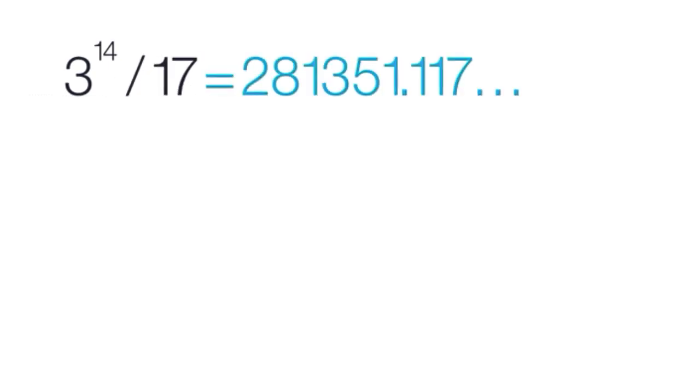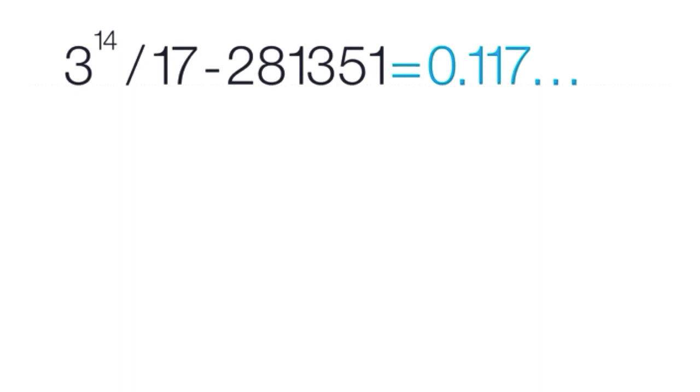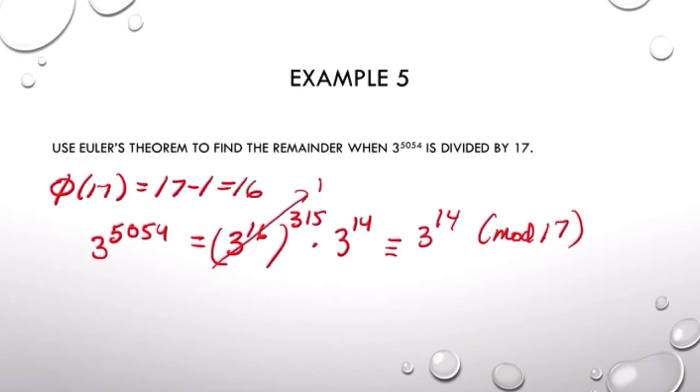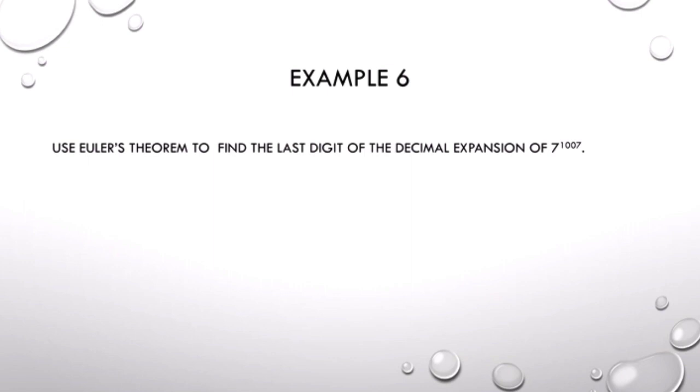Which we can now calculate on our calculator mod 17. So 3 to the 14th is given there. We want to divide it by 17. Then we'll subtract off the whole number part, 281,351. We've got the fraction part, and if we multiply back by 17, it'll give us the remainder of 2. So 3 to the 5054 reduces to 2 mod 17. So the remainder is 2 when you divide by 17.